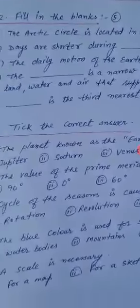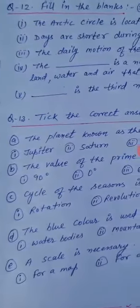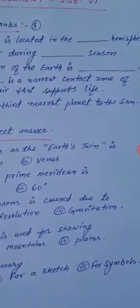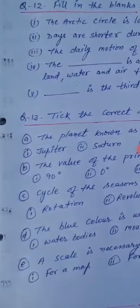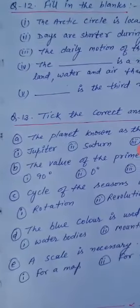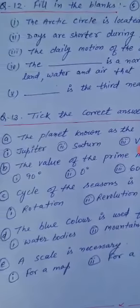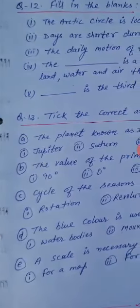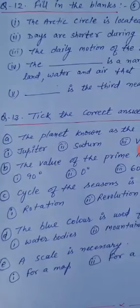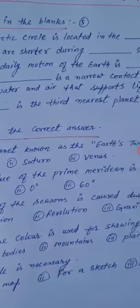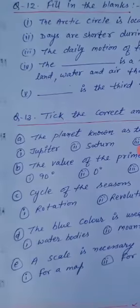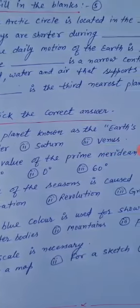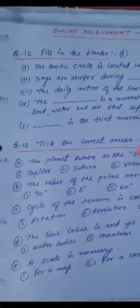Question number 13: the planet known as Earth's twin is — option one Jupiter, Saturn, or Venus. Tick the correct one. Question B: the value of prime meridian is 90 degree, 0 degree, or 60 degree. Tick the correct one.